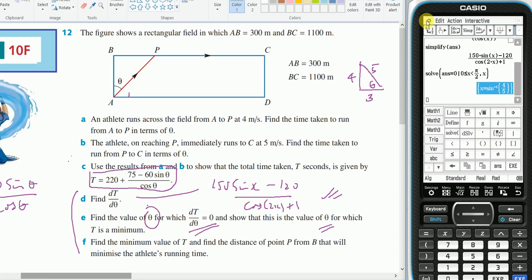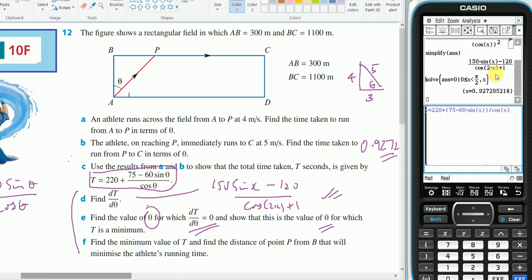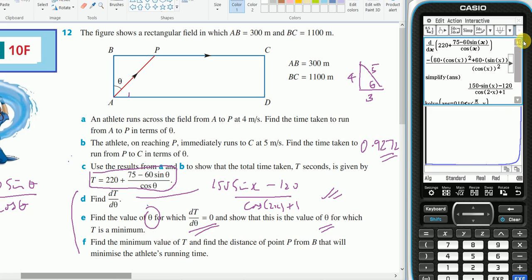If I do a decimal answer for that, that's going to be 0.9272. And if I was to graph my t value, this is my t value.